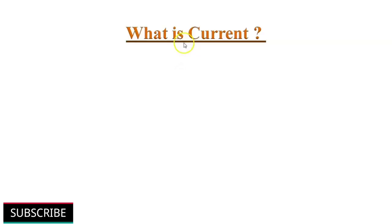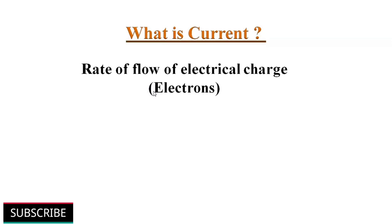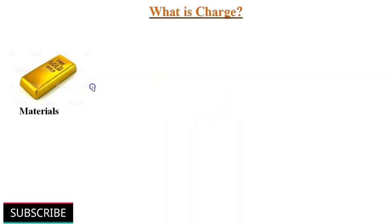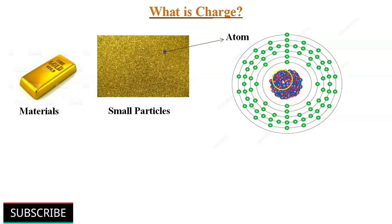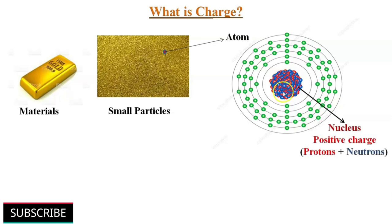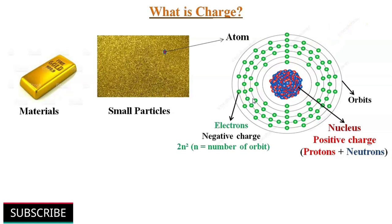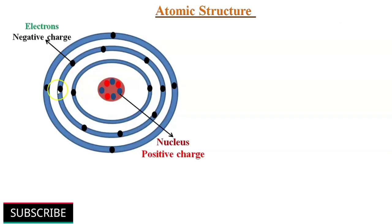Let's start with current. What is current? Electrical current is defined as the rate of flow of electrical charge or electrons. First, let us discuss what is charge. All materials are composed of very small particles called atoms — the building blocks of all materials. An atom consists of a central nucleus of positive charge. Around the nucleus there are different circular paths called orbits, in which negatively charged electrons move. The negatively charged electrons can move only in certain permitted orbits.